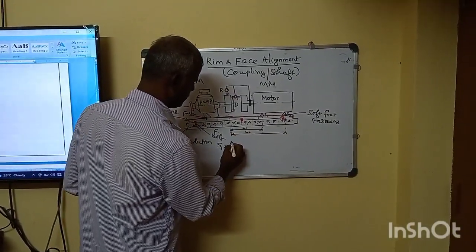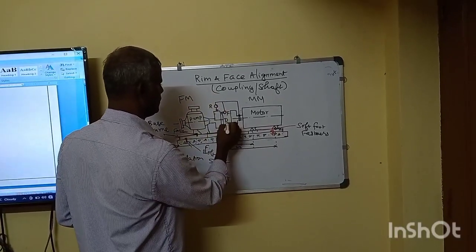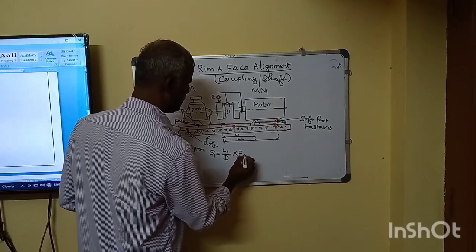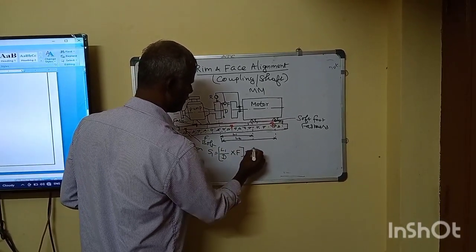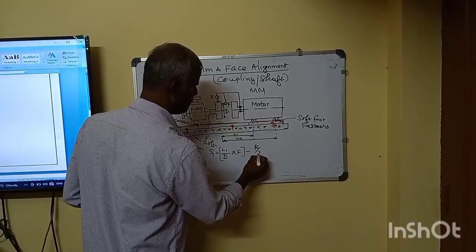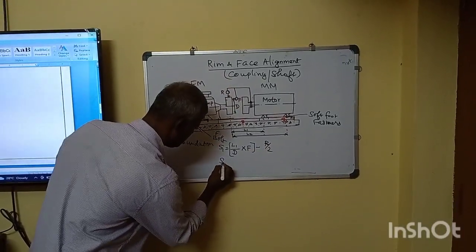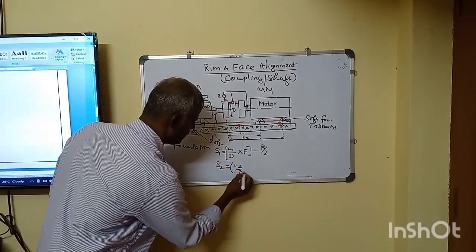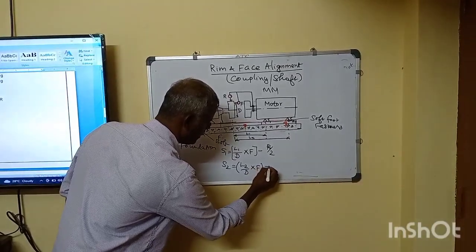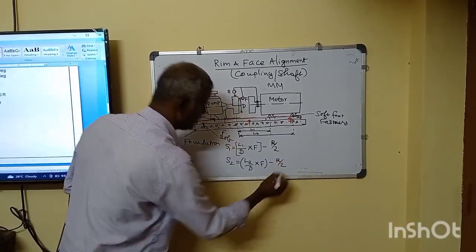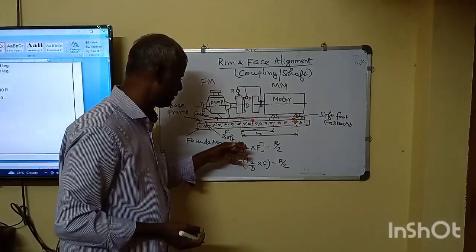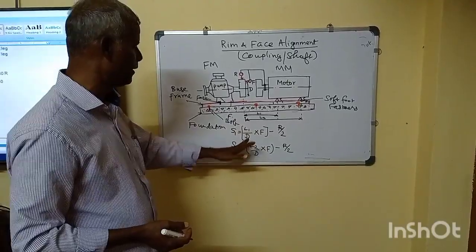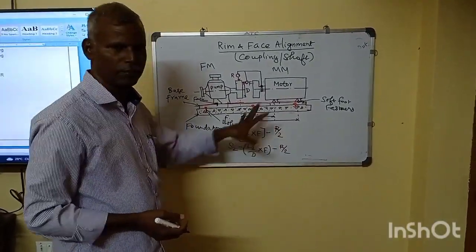The formula is: L1 divided by D into F bracket minus R by 2. Also, L1 divided by E into F minus R by 2. This shows the difference between L1 and L2.